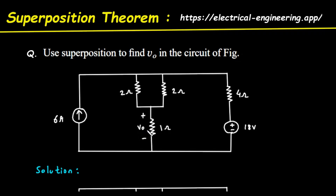Notice the plus and minus signs across this resistor. This tells us the polarity — we are measuring the voltage with the top end being positive relative to the bottom end. Finally, on the right side of the circuit, we have another source. This one is a voltage source, shown as a circle with plus and minus signs inside. It provides a constant voltage of 18 volts, connected in series with a 4-ohm resistor. So we have a circuit with two different power sources: a 6-amp current source and an 18-volt voltage source.